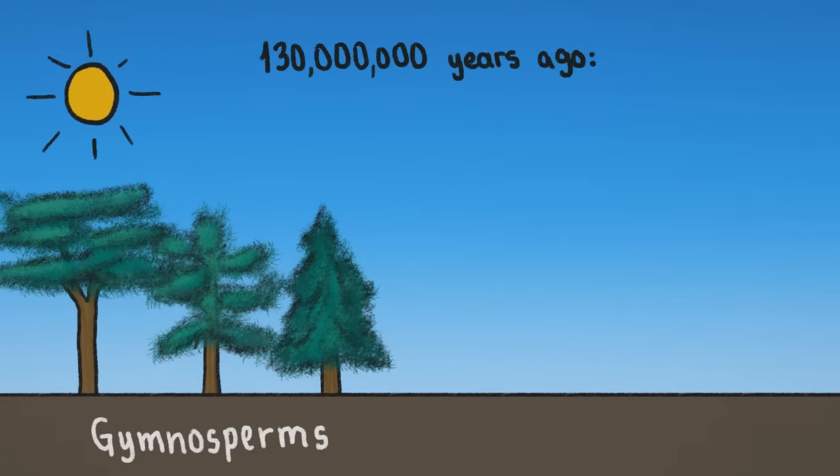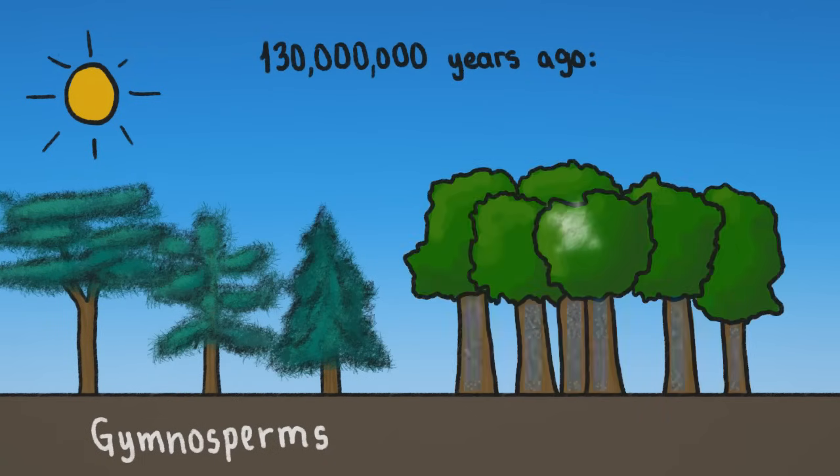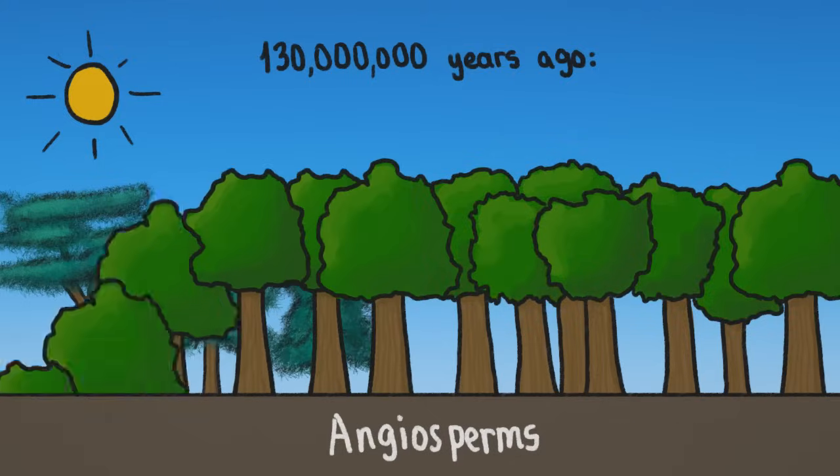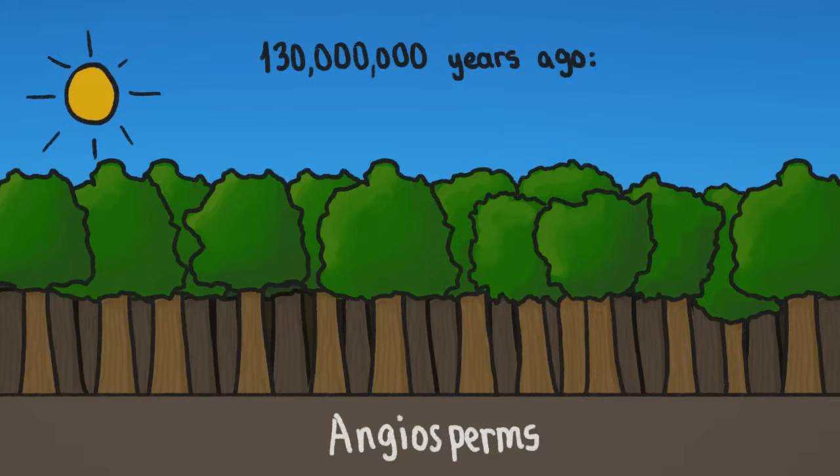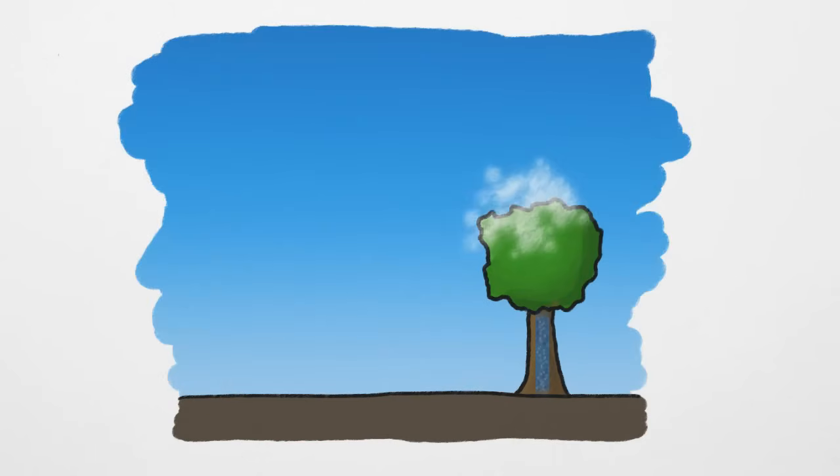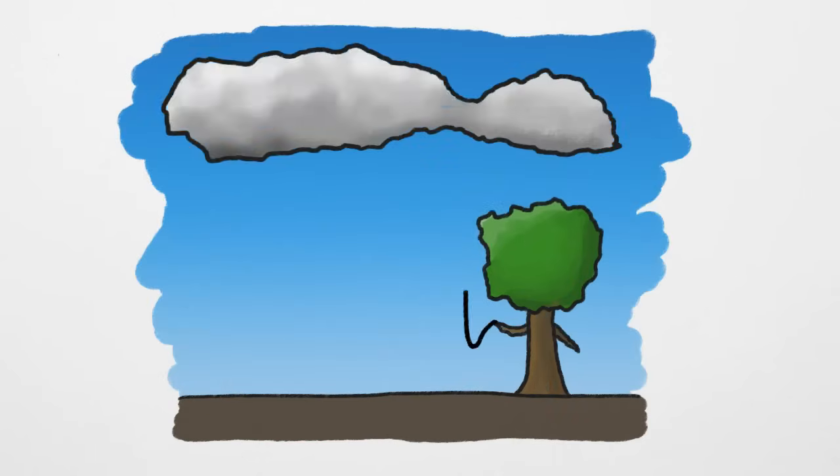However, around 130 million years ago, a new kind of plant developed that took the risk of losing more water in return for souped-up photosynthesis. These were the flowering plants, and their risk paid off. Their faster growth enabled them to outcompete the ancestral pines and take over the tropical regions of the globe. These angiosperms lost so much water into the air that as they spread, they brought their own rain with them.